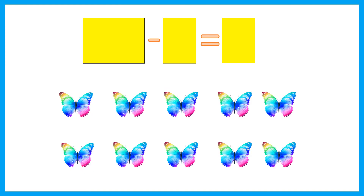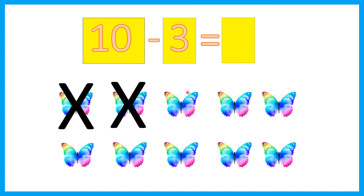Final example. How many butterflies are there? 1, 2, 3, 4, 5, 6, 7, 8, 9, 10. There are ten butterflies minus three. So we need to cross out three. 1, 2, 3. So how many butterflies are left? 1, 2, 3, 4, 5, 6, 7. Seven butterflies.